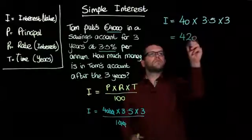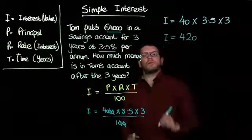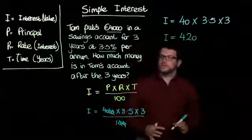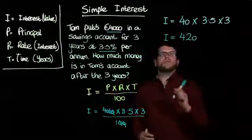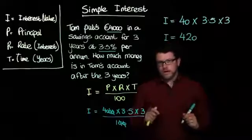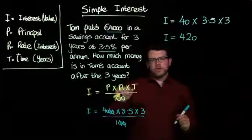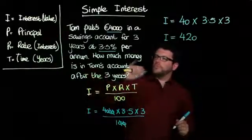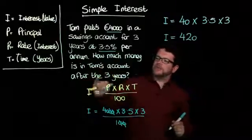So I is equal to 420. You don't need to do that in your head. You can use your calculator. Do remember that. I is equal to 420. Careful. Read the question again. What were we asked for? Well, what we were asked for, how much money is in Tom's account after the three years?